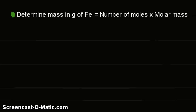Now the last step is to determine mass of iron produced. That is equal to number of moles, we have just calculated 1.6, times the molar mass of 55.8.